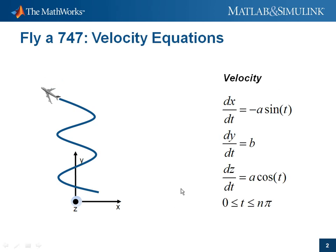The first thing we're going to do is basically compute the velocity equations. Since t was the parameter, we're going to assume that t is time. The velocity is obtained by the first derivative, and you can see these are the equations that we get. This is one advantage of defining a trajectory parametrically, because it lends you to differentiate very easily.